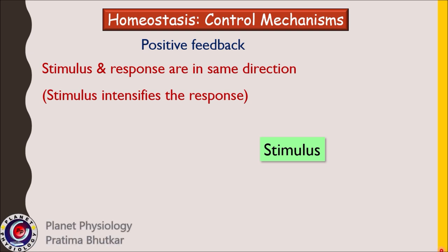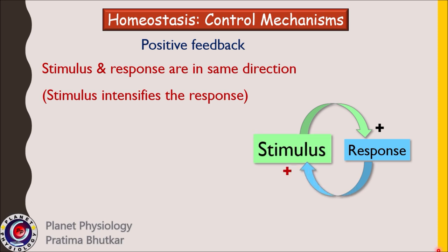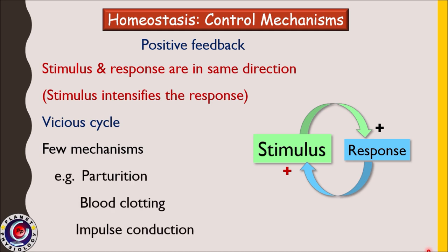Now let us study positive feedback mechanisms. In this case, stimulus and response work in the same direction — the stimulus initiates a response, and the response further intensifies the stimulus, hence it is known as a vicious cycle. Only 1% of the body's regulatory mechanisms utilize positive feedback. A few examples are parturition, the clotting process, impulse conduction, and ovulation triggered by the LH surge.